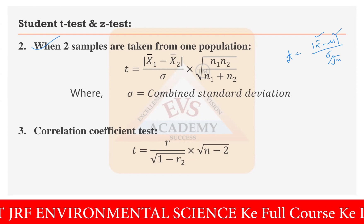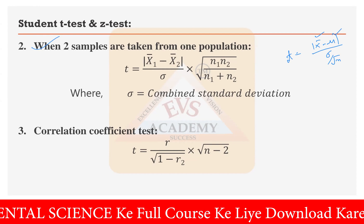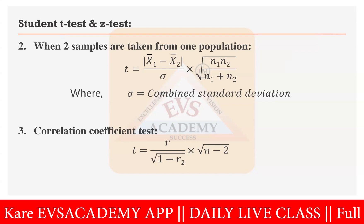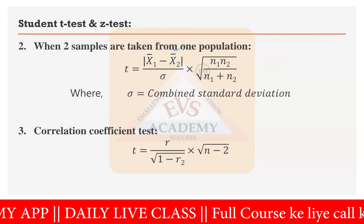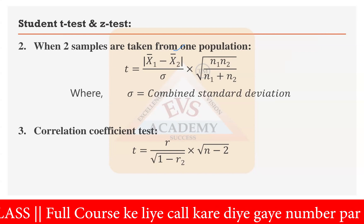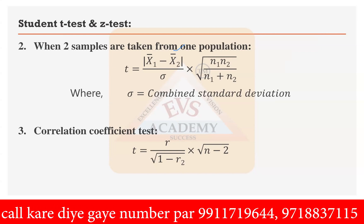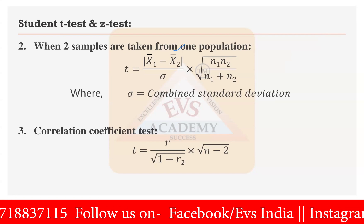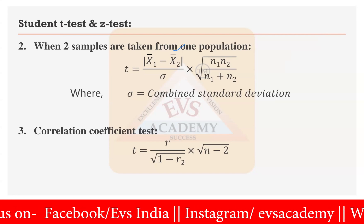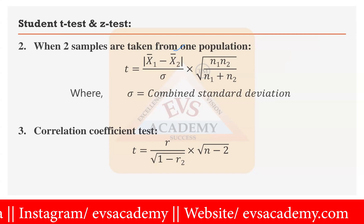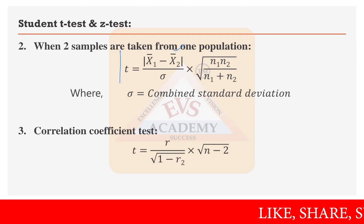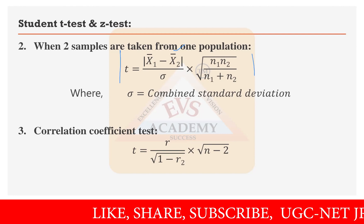This particular application is only for questions where two different populations are provided. When two different populations are provided, you have to compare the means of both populations. In place of μ, you write x̄1 - x̄2 because two different population samples are present, divided by the combined standard deviation σ. That combined standard deviation formula we have already seen, multiplied by √(n1 × n2 / (n1 + n2)) — this full formula gives you the calculated t value.